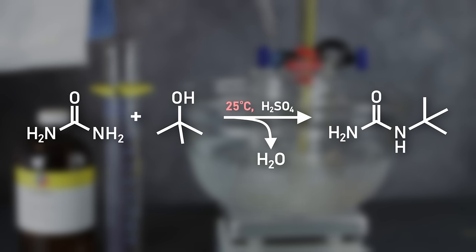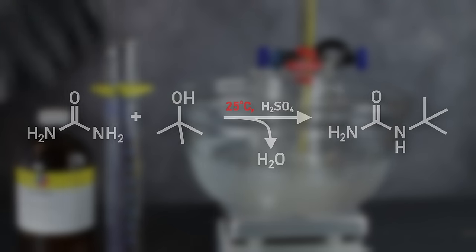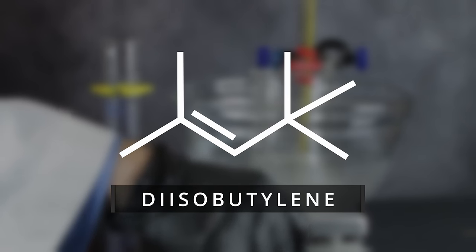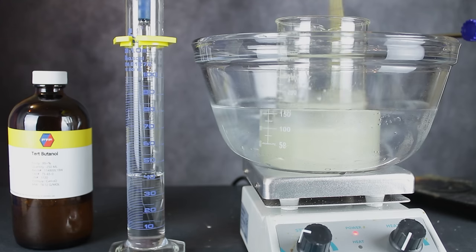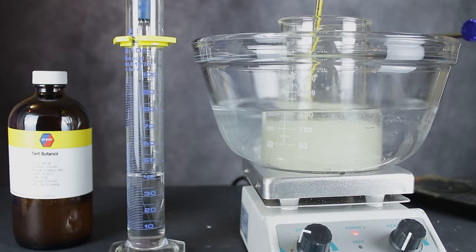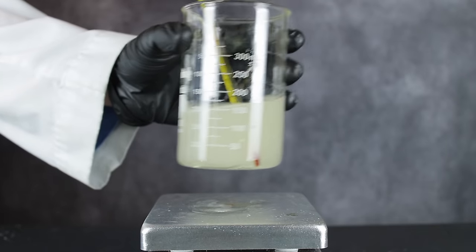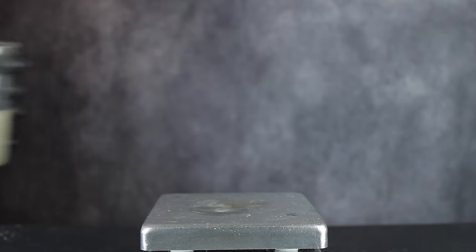For this step, keeping the temperature below 25 degrees is fairly critical, because higher temperatures lead to the formation of diisobutylene, which presents itself as an insoluble oil on the surface of the mixture. Its presence doesn't necessarily hurt the reaction, but it does mean your yield will be lower. With all the tert-butanol mixed in, I was left with a thick, syrupy solution, which was allowed to sit overnight to ensure a complete reaction.